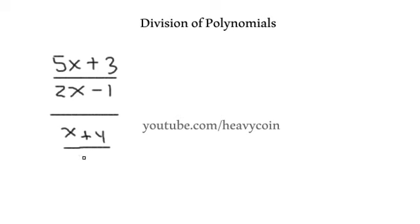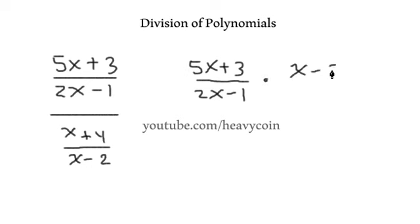5x plus 3 over 2x minus 1 and that's all over x plus 4 over x minus 2. Alright. So I'm going to take this and flip it and we're going to rewrite this as 5x plus 3 over 2x minus 1 times, alright, this becomes x minus 2 over x plus 4.